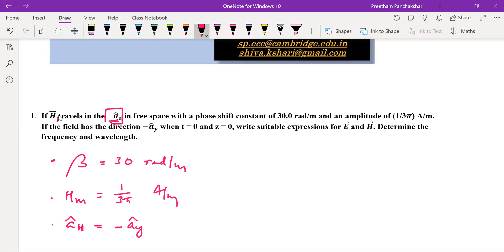Then what about this minus Az cap? Minus A cap z is the direction of the wave traveling. H travels. Look at minus A cap z is the direction of the wave traveling. That means the direction of the wave propagation is minus Az cap. Direction of wave propagation. Minus Ay cap is direction of the magnetic field.